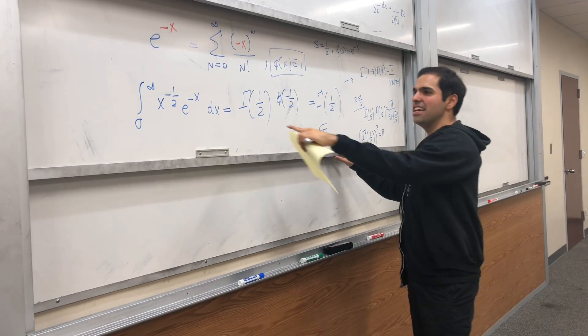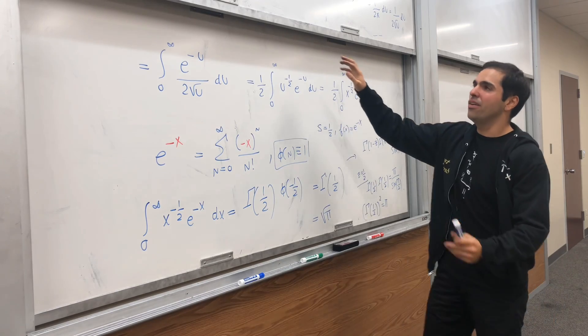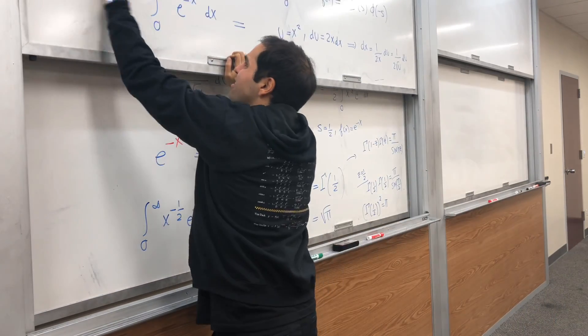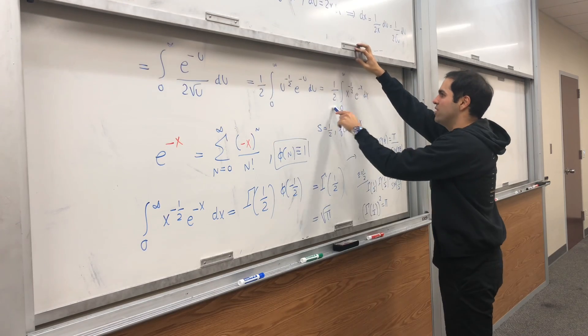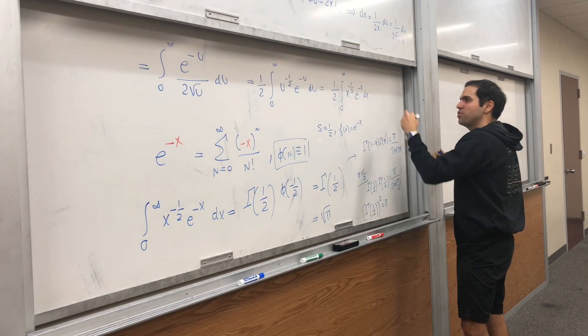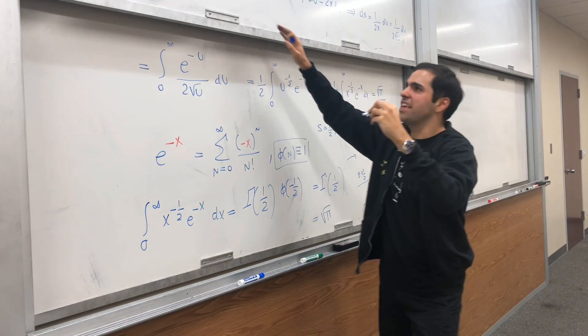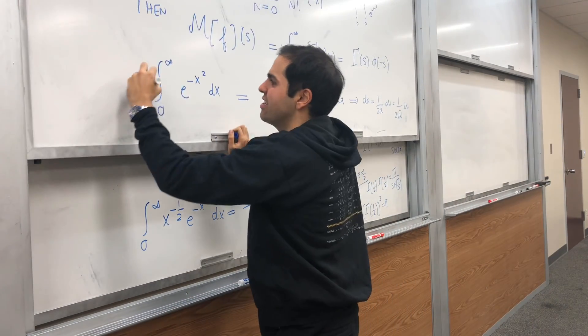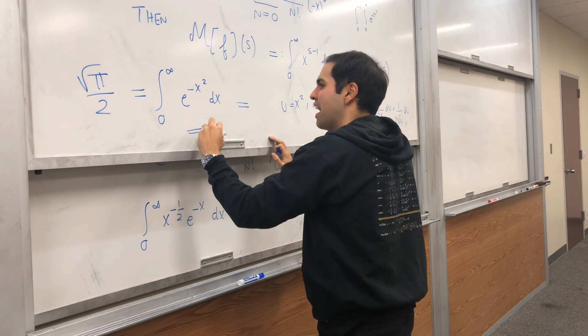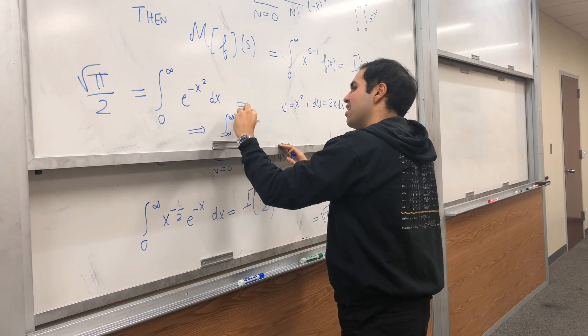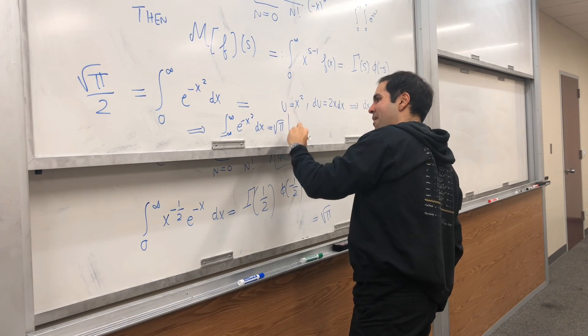So this integral is square root of pi. In particular, the integral from 0 to infinity of e to the minus x squared dx is one half of that, so square root of pi over 2. Therefore, the Gaussian integral is square root of pi over 2, and the full Gaussian integral of e to the minus x squared dx is indeed equal to square root of pi.